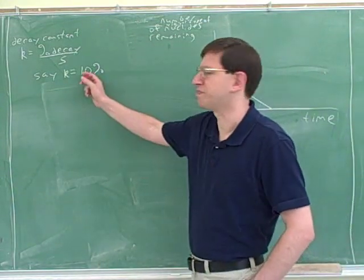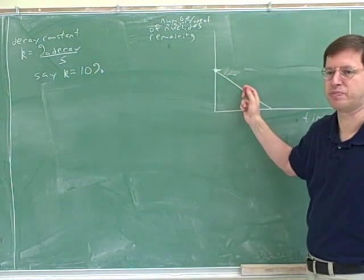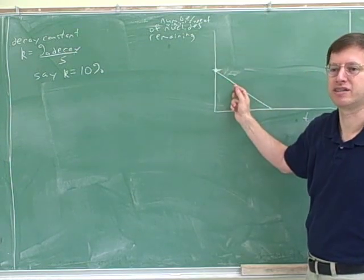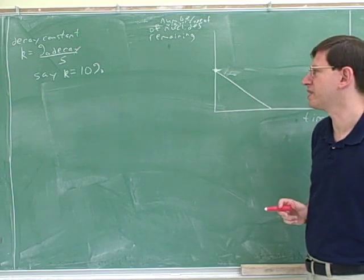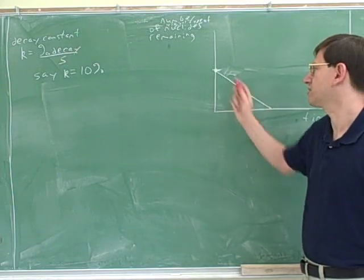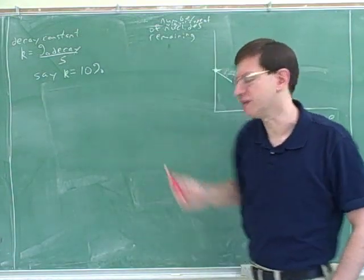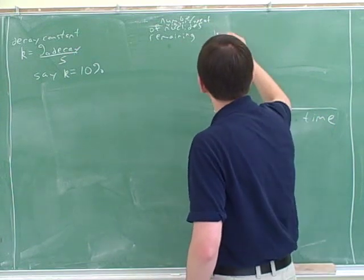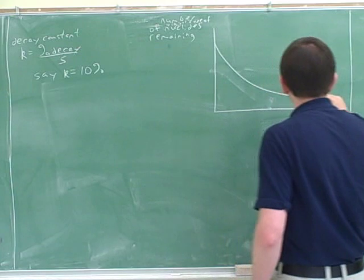So you might lose the first 10% after one second, and then you would lose 10% of what's left in the next second, and then you would lose 10% of that in the next second. So you're going to lose a constant percent. Now, if you think about it, this doesn't represent a constant percent of loss. It represents a constant number lost. Since this is a straight line, it has a constant slope. So this might represent just, say, 10 nucleuses lost per second.